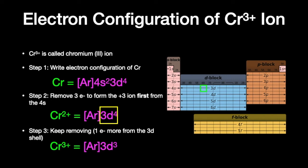Interestingly, if chromium lost three additional electrons it would be the chromium 6 ion, which is another oxidation state for chromium that does have a noble gas electron configuration — but chromium 3 ion does not.